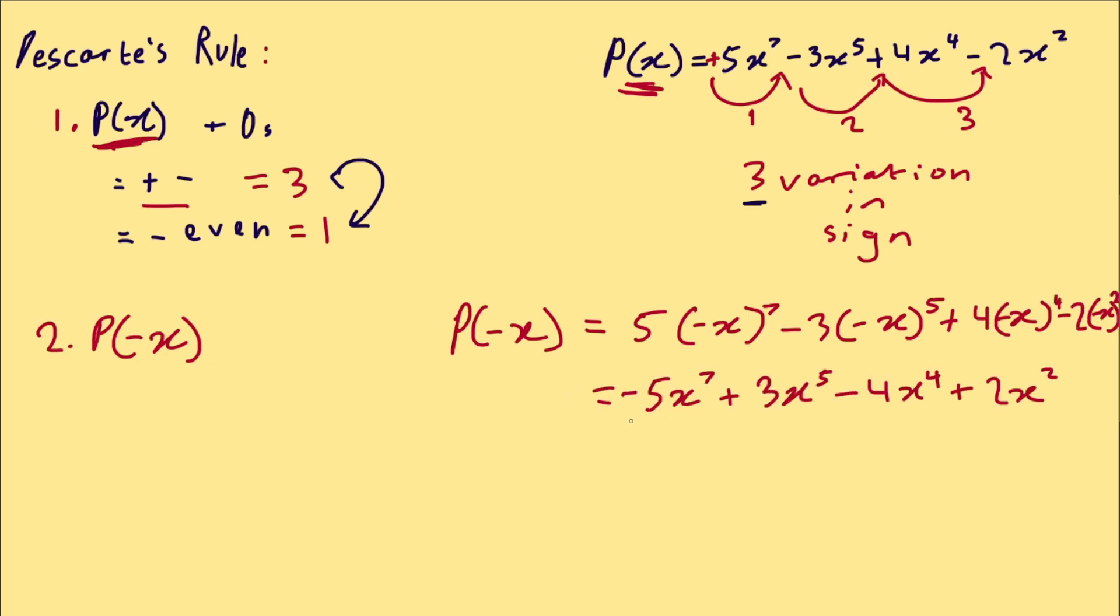Now let's count the sign changes. So it changes once here, change again, three. So the sign changes three times. Three variations in sign.